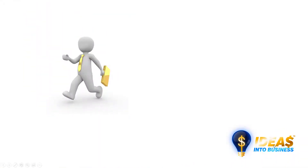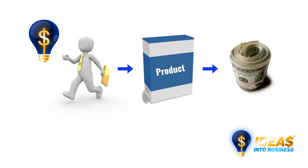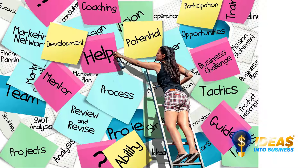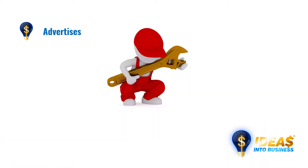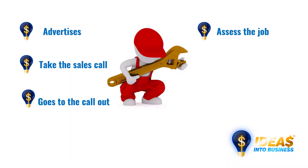Here's what happens in most businesses. The owner has an idea and creates a product or service and they sell it. The owner then has to do the advertising, selling, making the product, quoting, doing the job, et cetera. For example, if you are a plumber, the plumber advertises, takes the sales call, goes to the call out, assesses the job, does the quote, and if they get the job, then they go out and do the work. If you are a doctor, you see the patient, do the operation or the procedure. If you are an accountant, you do the sales pitch to get your new client, and then you begin work on your client's file. This is standard business.